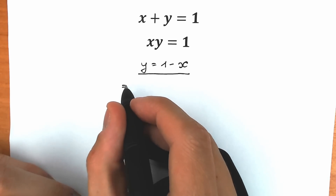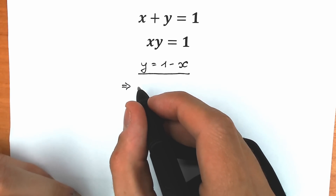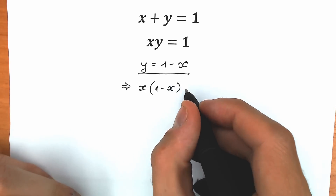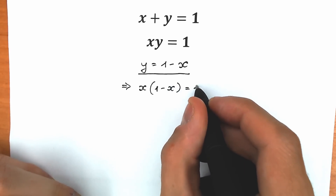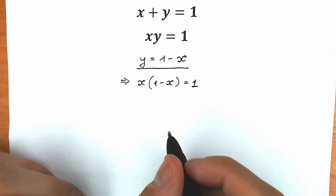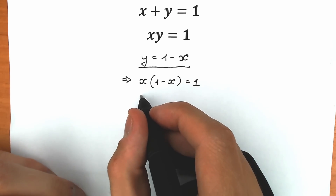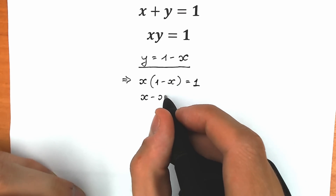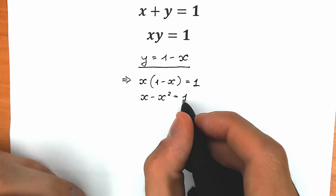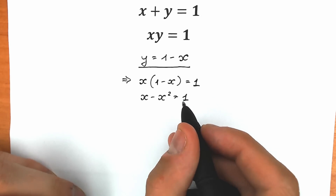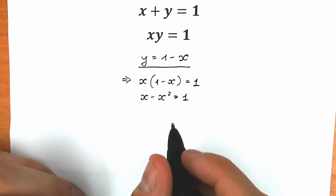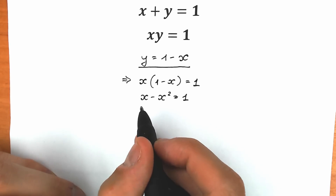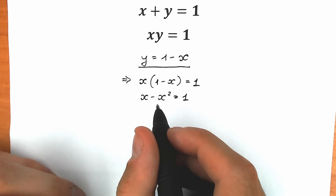As a result, what do we have? We have x times (1 minus x) equal to 1. Let's open the parentheses — as a result we have x minus x squared equal to 1. It feels like we have a quadratic equation, but we prefer a slightly different order. We need x squared on the first position and x on the second position, so let's rearrange.